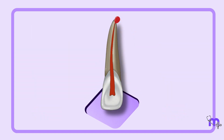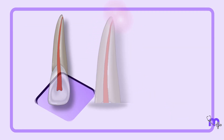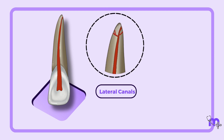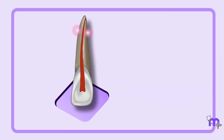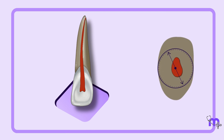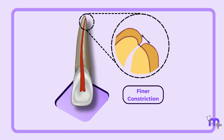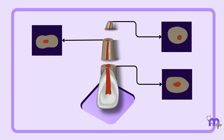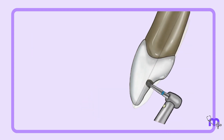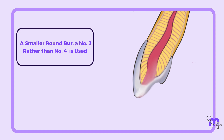Similarly, the abscess can drain both palatally and labially due to the distal curvature of the root. Lateral canals are more frequent in the laterals than in the central incisors. The root is conical in configuration with a finer diameter than central incisors and may occasionally exhibit a finer constriction towards the apex. The cross section shows that the canals are ovoid, which slowly becomes round at the apical third. The axis opening is the same for both, but a smaller round burr — a number 2 rather than number 4 — is used for the initial axis due to the size difference in the tooth.